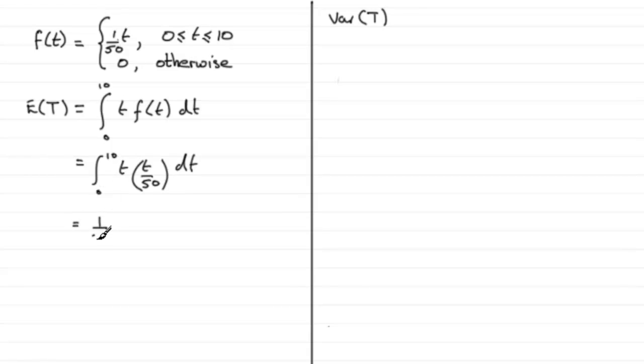We can bring the 1/50 out the front of the integral. You don't have to, but it's always good habit to get into. So that's integrating from 0 to 10, t squared with respect to t.